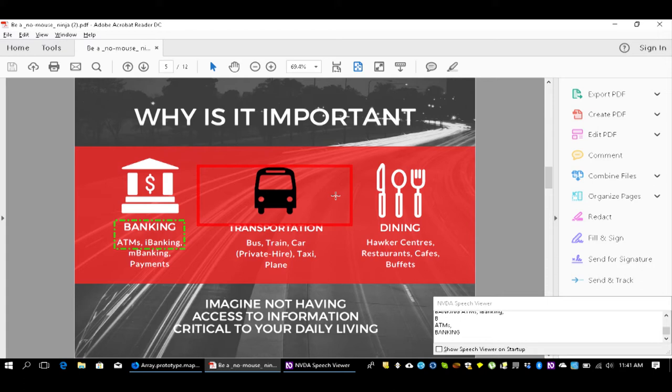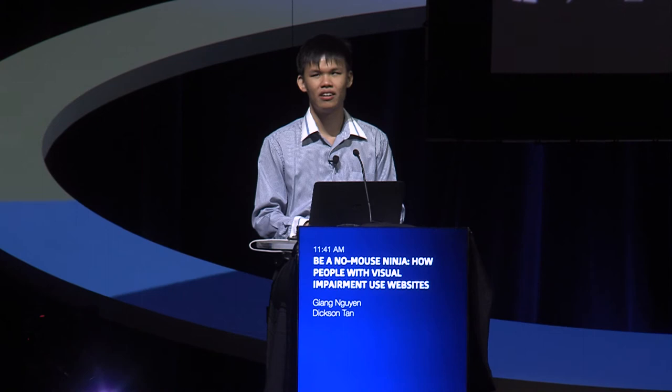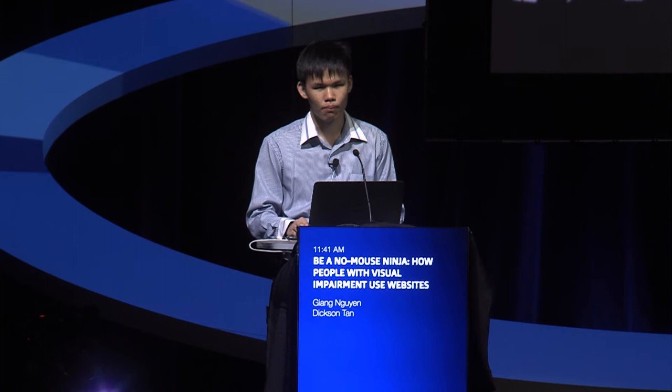Why is accessibility important? Imagine in your everyday life not having convenient or easy access to information you need, or not being able to perform activities for your daily life. For me personally, examples include not being able to conveniently use an internet banking website because it doesn't use good HTML — I actually experienced this on one of the local banking websites — and not having convenient access to integrated development environments, which would really improve my productivity but don't work well with a screen reader.